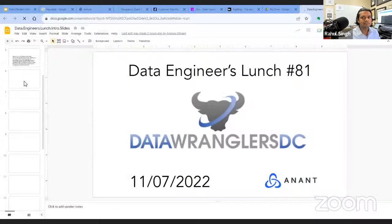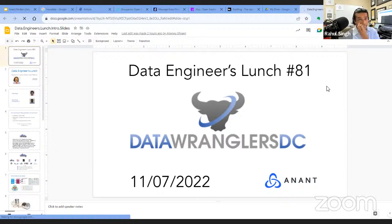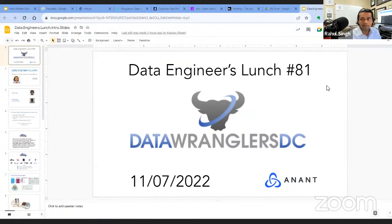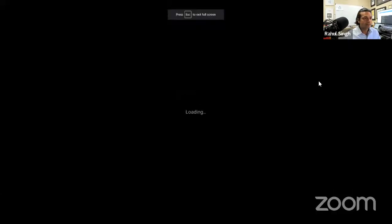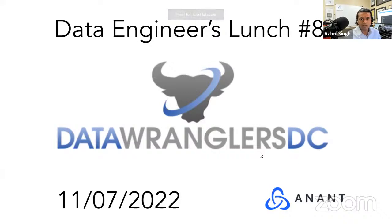My deck for the Data Engineer's Lunch is taking a little longer — give me one second. There we go. You all should be able to see my screen. This is Data Engineer's Lunch number 81. It's huge. When we started it, right after the pandemic shutdown, we did not know we were going to continue doing it well into the third year. So this is great.